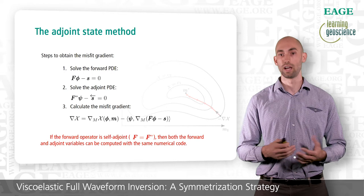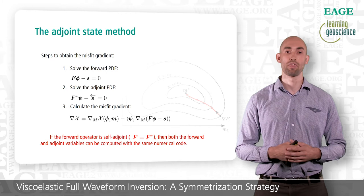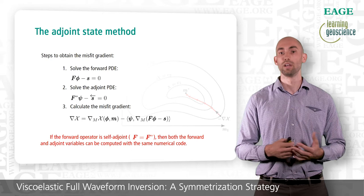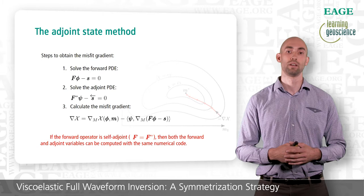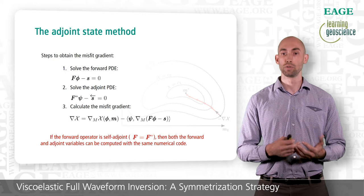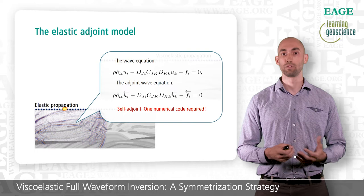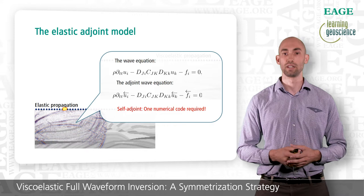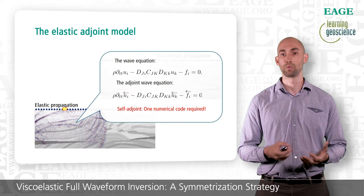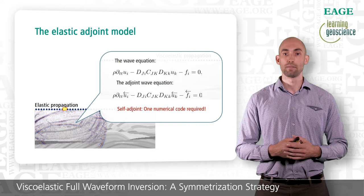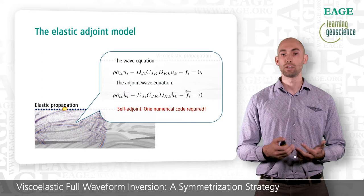Compared to computing the misfit gradient through the Jacobian matrix, we only need to solve two PDEs, whereas the Jacobian approach requires solving a number of PDEs equal to the number of parameters. So the adjoint state method is very efficient. One drawback is the need to solve a new PDE for the adjoint variable and, in general, write a new numerical solver. But we are lucky in full waveform inversion: if we look at the elastic wave equation in the displacement formulation, we obtain two identical PDEs for the forward and adjoint displacements — u and the adjoint displacement. As both PDEs share the same form, the elastic wave equation is self-adjoint, so we can use the same numerical code to solve for both wave fields.